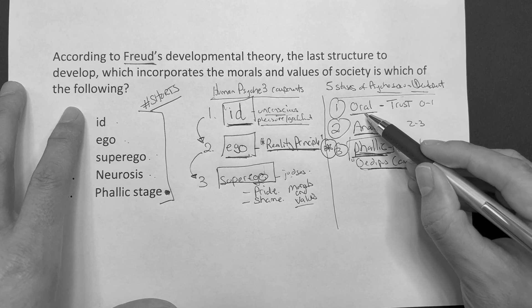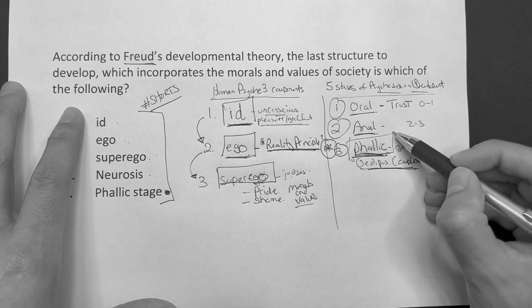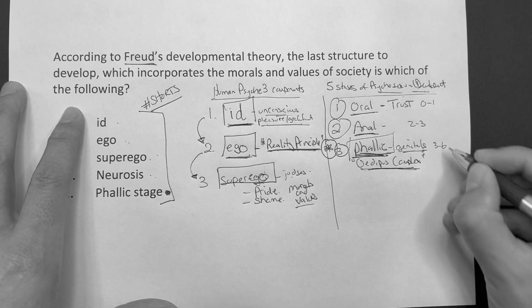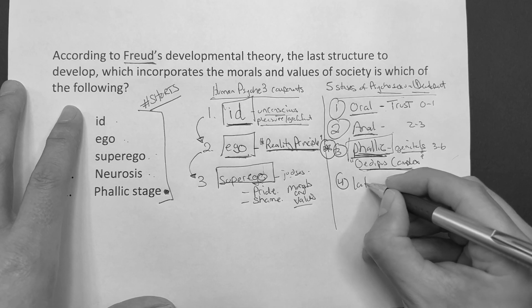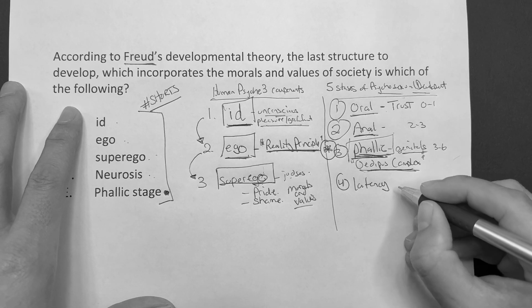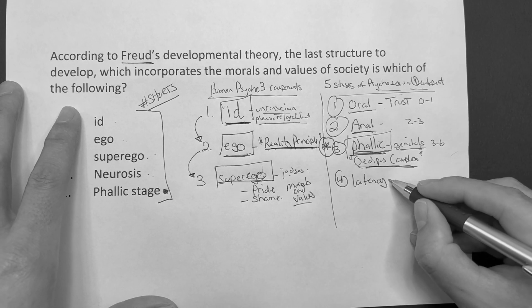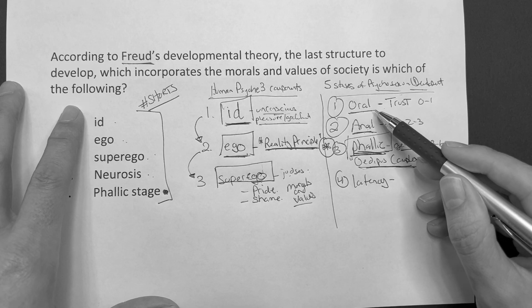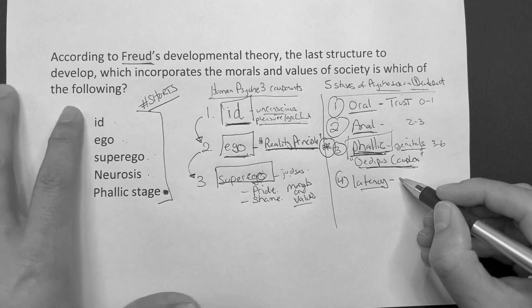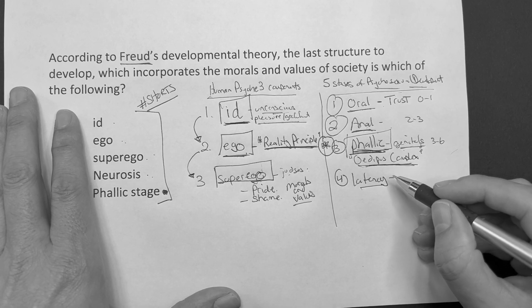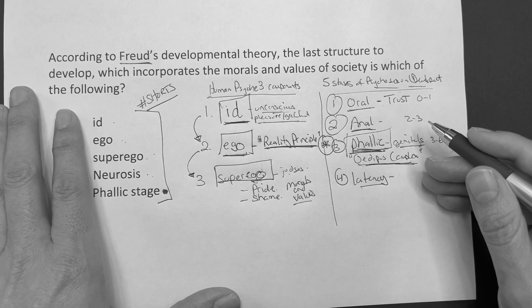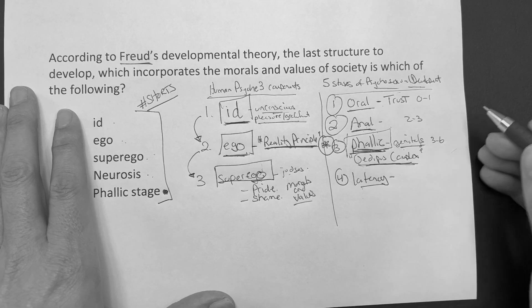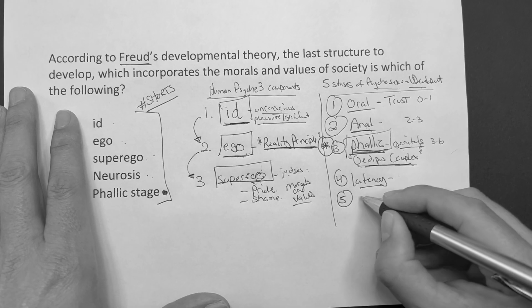But again, in the oral stage it's the mouth. Anal stage, it's the anus. Phallic stage, it's the genitals. And this is roughly three to six years of age. And then we go into the latency stage. Now this is where the sexual urges are suppressed. So there is no mouth, anus, or genitals, right? And this is where kids kind of tend to hang out with the same sex partner. And this is where they can develop meaningful relationships and stuff that they'll carry into adulthood.